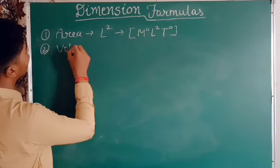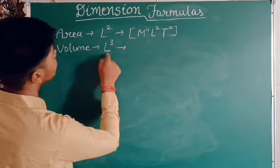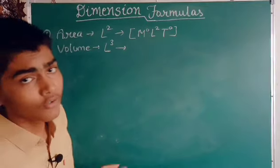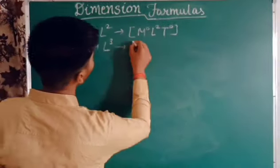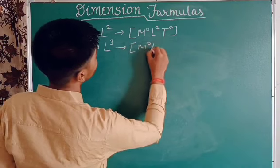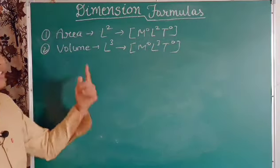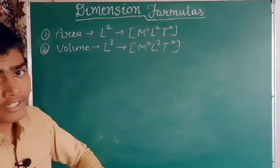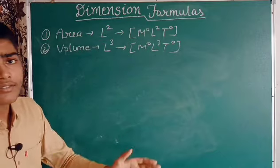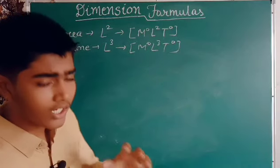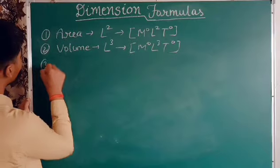Now let's make the dimensional formula for volume. Volume is the cube of length, so we write it as L³. Putting it into the general formula: M⁰L³T⁰. That is the dimensional formula for volume. This is quite easy, but as we go further up in dimensional formulas, more knowledge will be required.